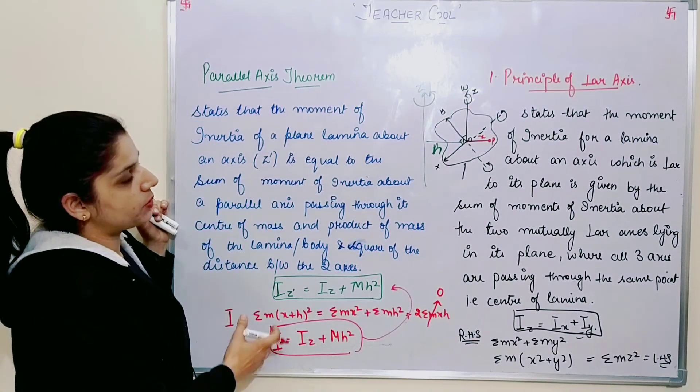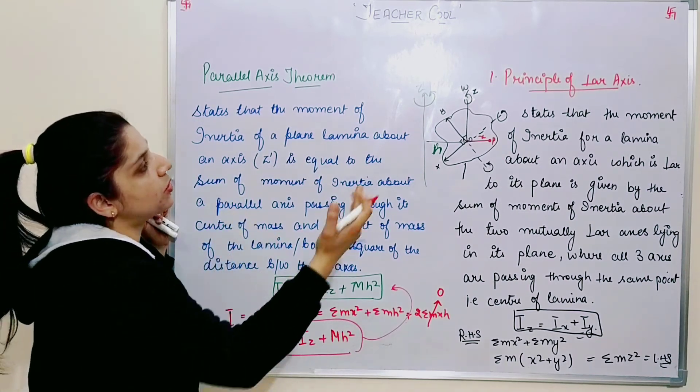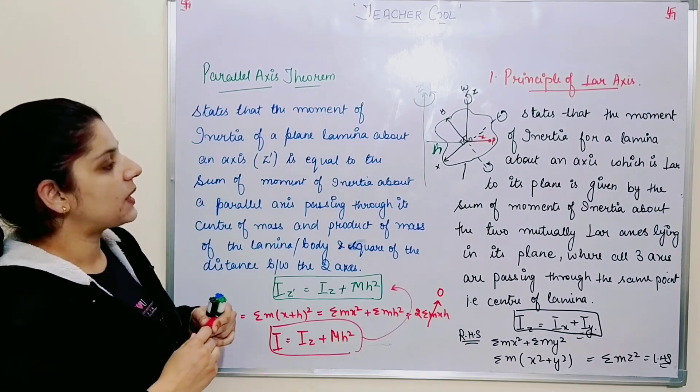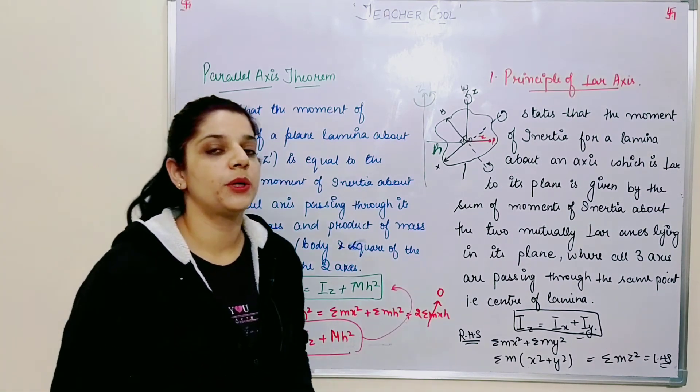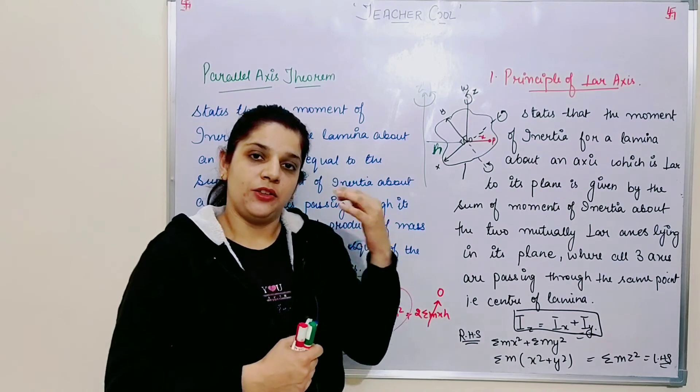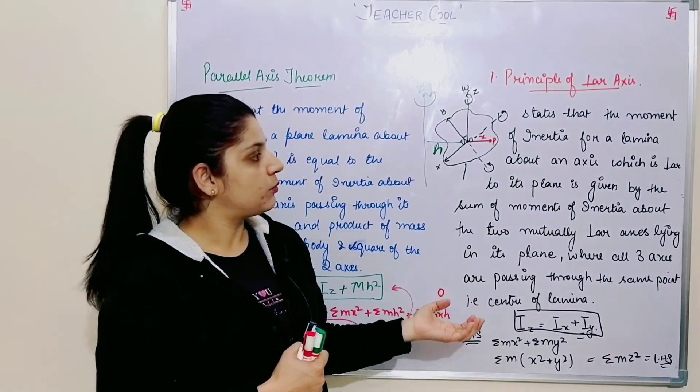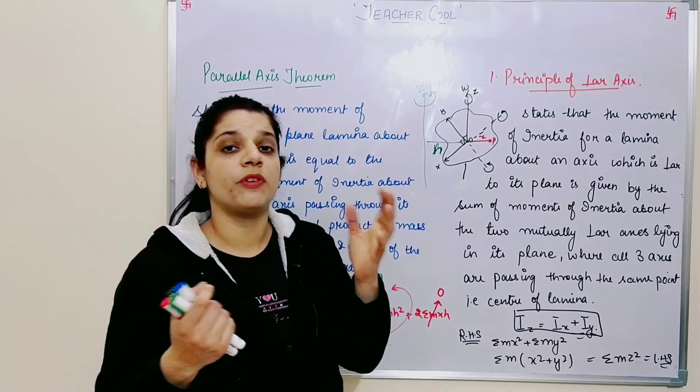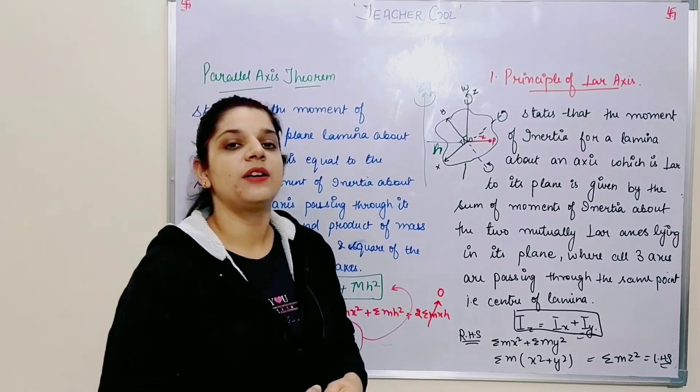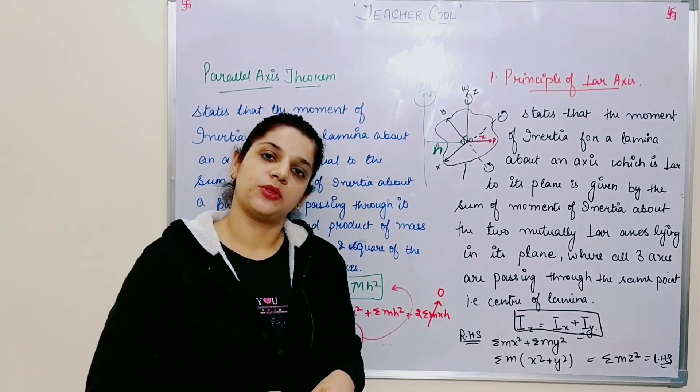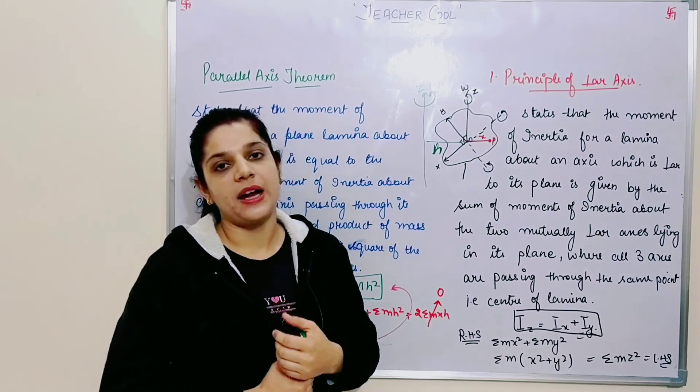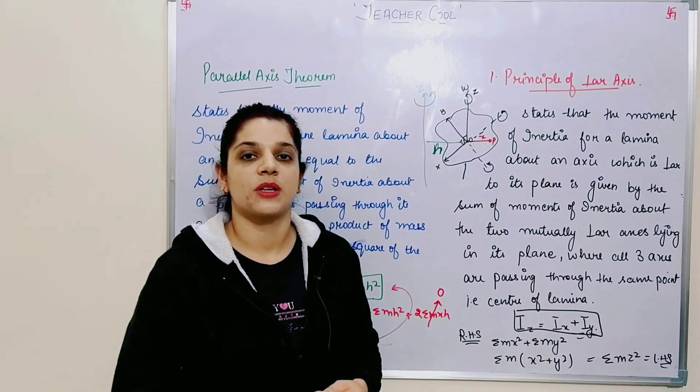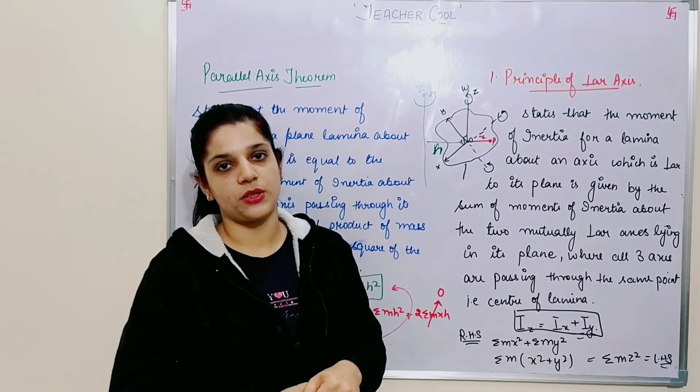So this is the proof, this is the statement for the parallel axis theorem and the perpendicular axis theorem. Now that we've learned how to find the moment of inertia using these theorems, we'll move on to a few examples which are very important from the point of view of exam also. And with that we'll finish our syllabus. After that, your doubts and queries are most welcome. Don't forget to like, share, and subscribe to my channel. Thank you so much.